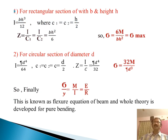There are two cases: one for rectangular section, another for circular section. In the case of rectangular section with width b and height h, I equals bh cubed by 12, and c1 equals c2 equals h by 2. From that, z equals I by c1 equals I by c2 equals bh squared by 6, where z is the section modulus. Finally, sigma equals 6M by bh squared, that is sigma max.